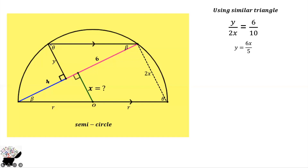This is a trapezoid, so this side would be 4X. This angle is 90 degrees, and we already know Y equals 6X divided by 5.